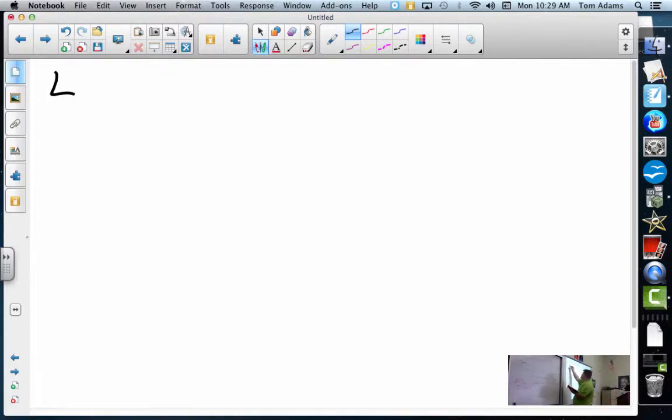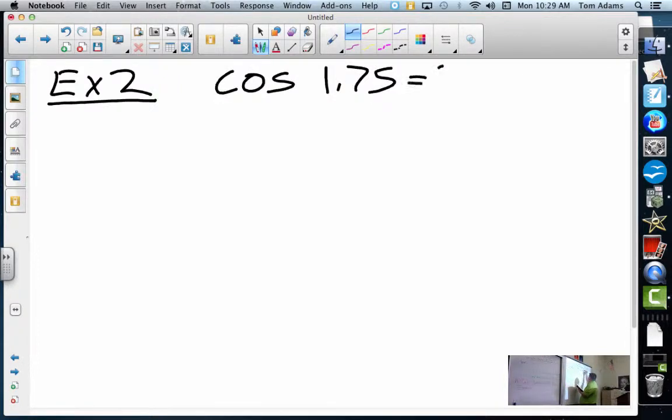All right, so now for example number two, they want us to figure out what cosine of 1.75 is. We'll try this. We haven't had a lot of luck with this. I don't know what 1.75 is on the unit circle.